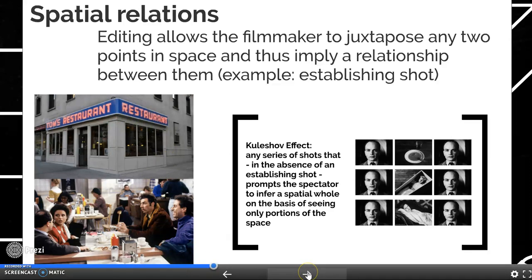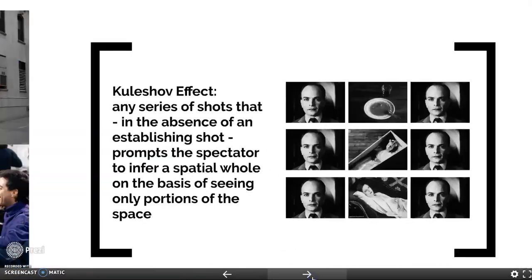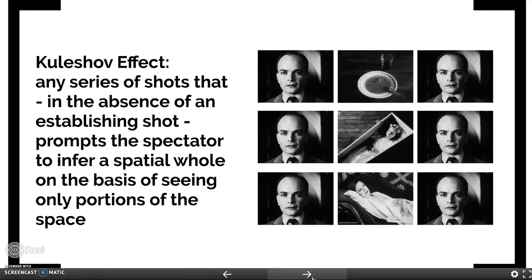Another important thing to think about when talking about spatial relations — the idea that an editor can put two images next to each other and we as an audience will imply that they are connected in space — is something called the Kuleshov effect. This is named after Lev Kuleshov, who was a Soviet filmmaker in the 1910s and 1920s. He discovered this mental phenomenon where if you put images side by side, the audience would infer that they were related to each other, even if there was no evidence whatsoever.